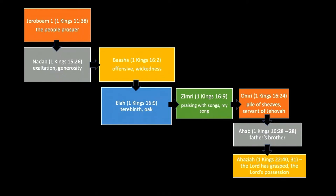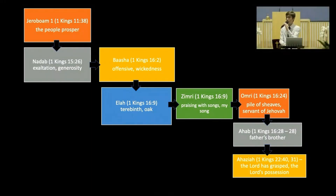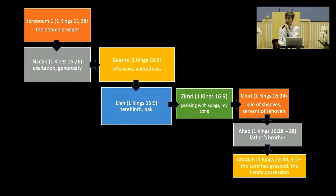After Elah is Zimri. Zimri was a chariot commander — something like today's tank commander. He conspired against Elah, who was drunk at the time. Elah did not do anything during his reign; he was just indulging his own desire, just drinking himself drunk, doing nothing. While he was drinking drunk, Zimri the chariot commander conspired against him and killed him.